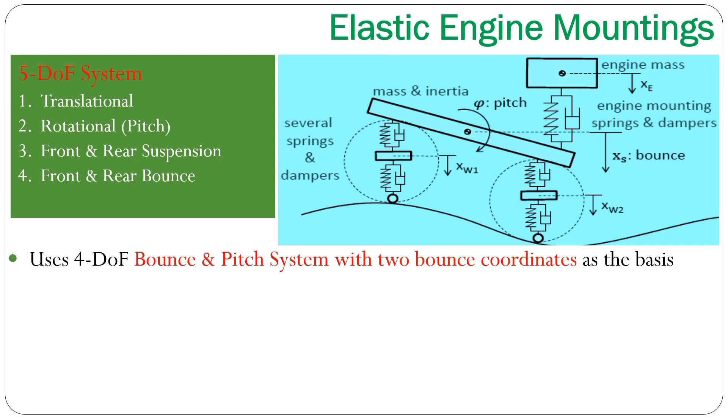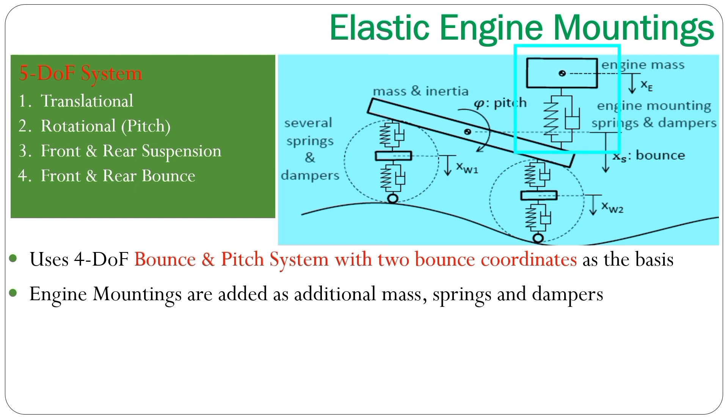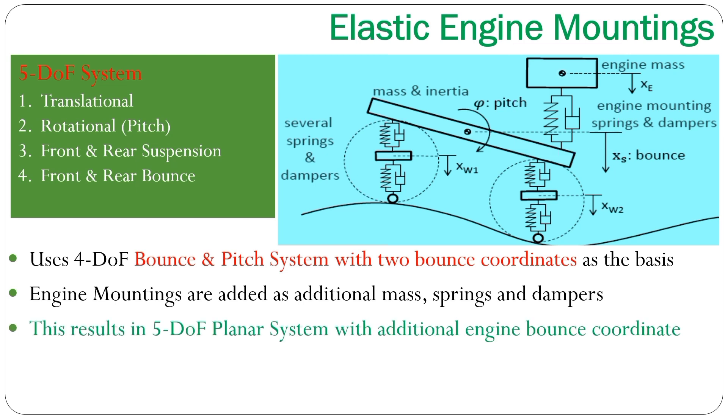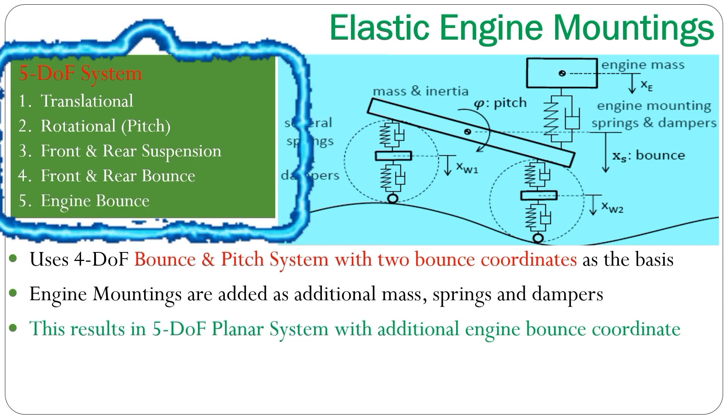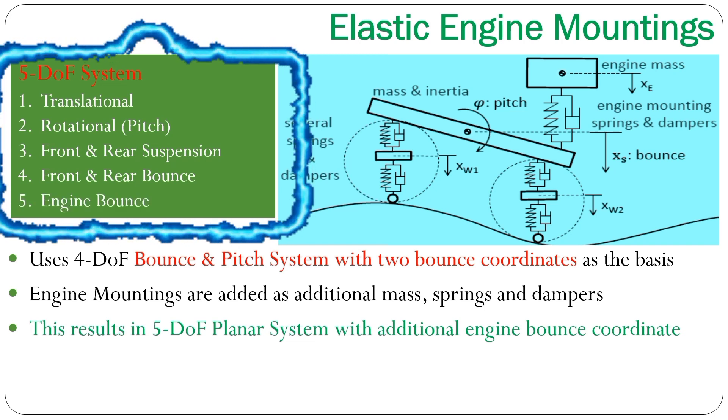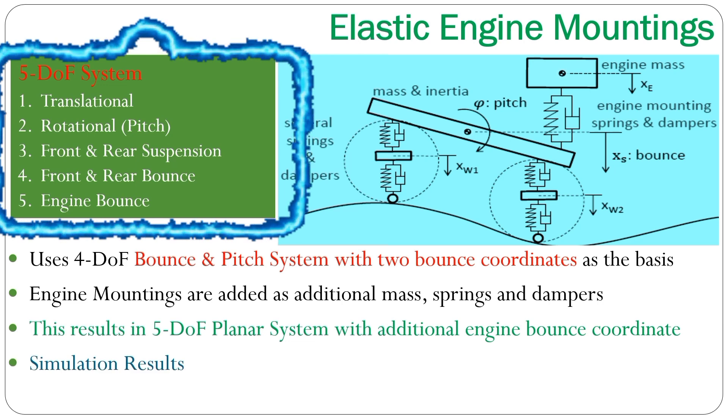Now, we can again see that the original system is the system from the previous model, that is, we have pitch and bounce model for the system as well as we have front and rear wheel bounce coordinates, this create our new model basis. With the additional engine mass and with the spring and damper for the engine mounting, we end up with a system that has five degrees of freedom. It's still a planar system, but it allows now to look at the additional engine bounce coordinate.